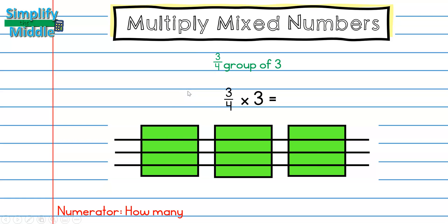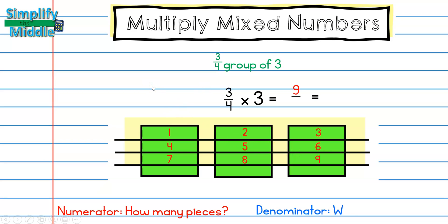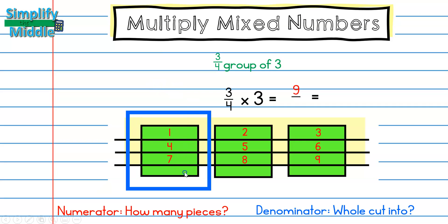For my numerator, remember I'm looking at how many pieces, and I only care about the pieces in these three rows because that is what my factor tells me. I'm going to highlight those three rows to make counting easier. I notice all my pieces are the same size — that's something important — and I have nine pieces. For my denominator, what has my whole been cut into? Four pieces. So my answer is nine-fourths, or two and one-fourth.